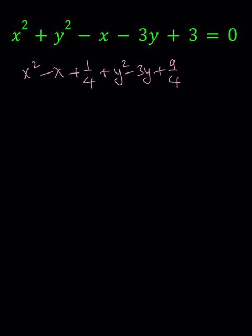Now I do need to make a 3 by adding the constants. 1 fourth plus 9 fourths is equal to 10 fourths, which is 5 halves. So you need to make it 6 halves. So you need 1 half. Add it to both sides or just add it.